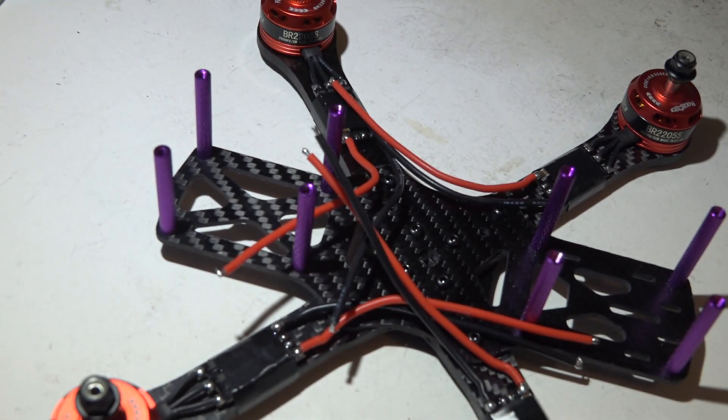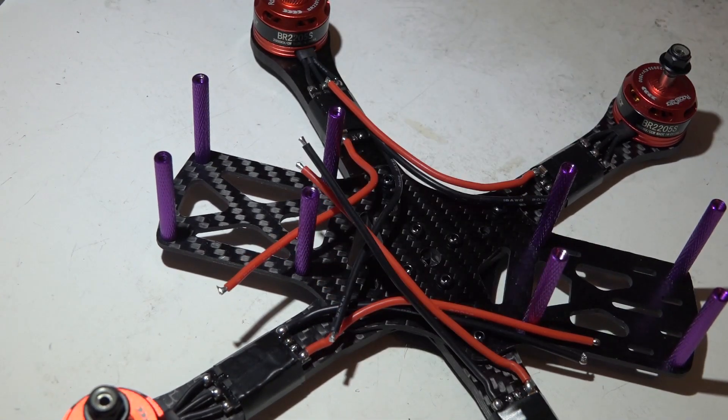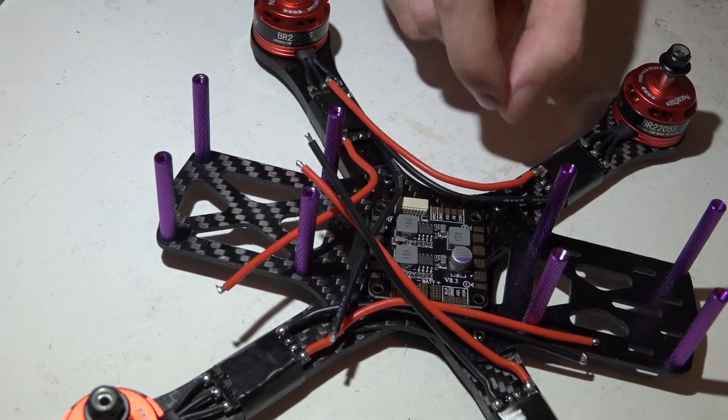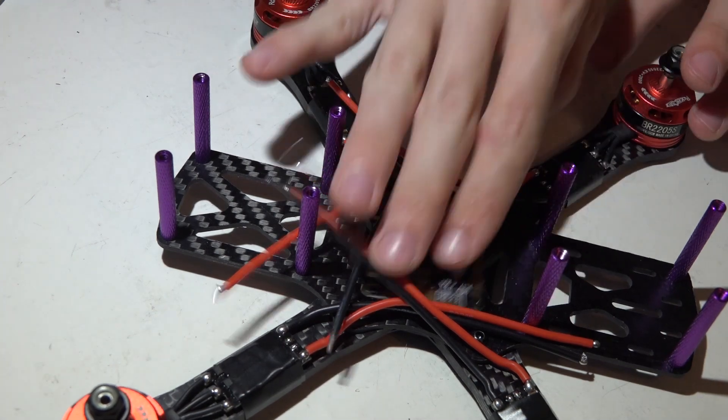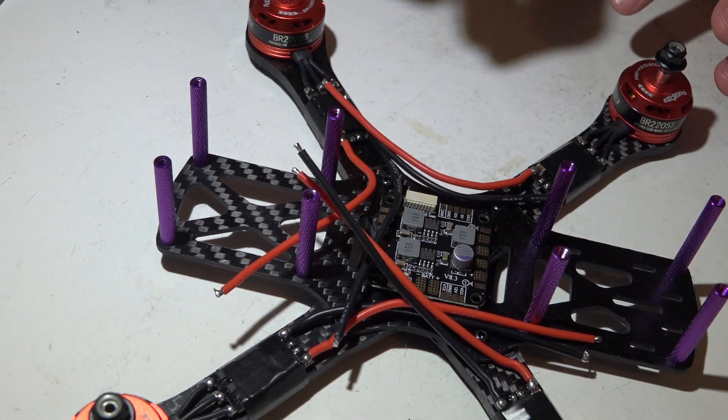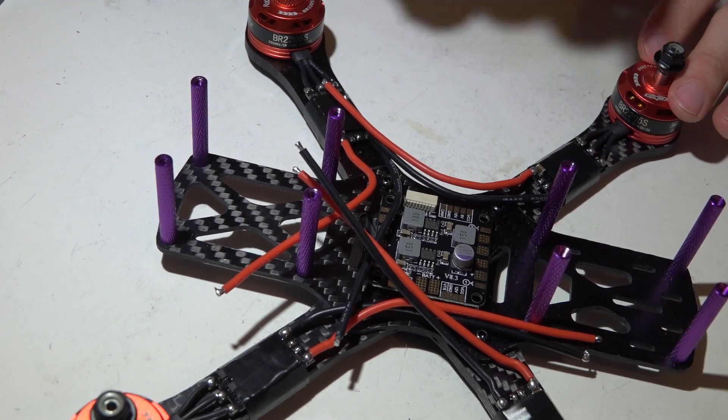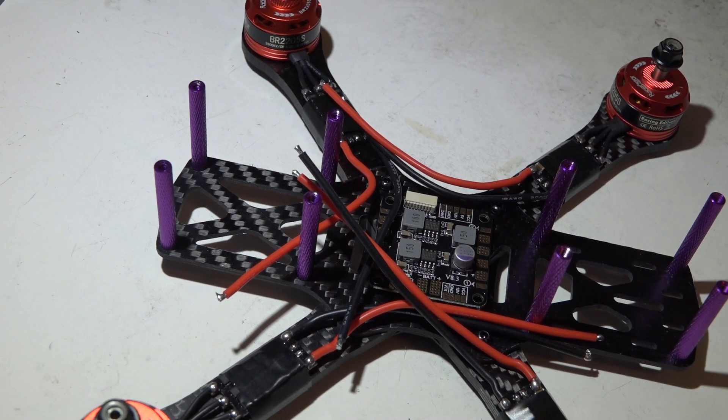I'll be using this PDB, which has a 5 volt regulator, 12 volt regulator, and LC filter all built into one. And I chose to go with this because it will make powering the camera and video transmitter I've selected easier. Plus we get that extra filtering, which will make our video feed a little bit nicer.